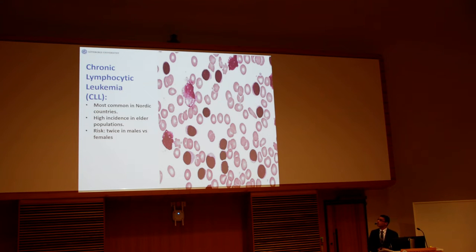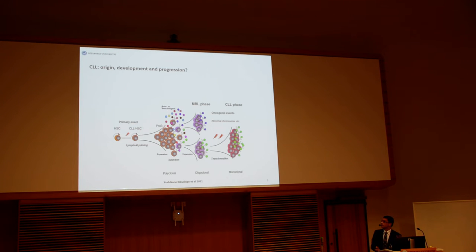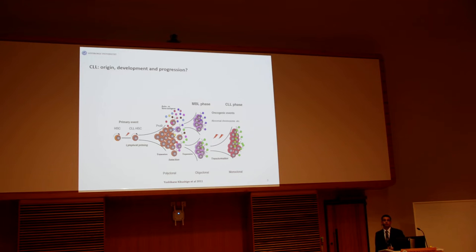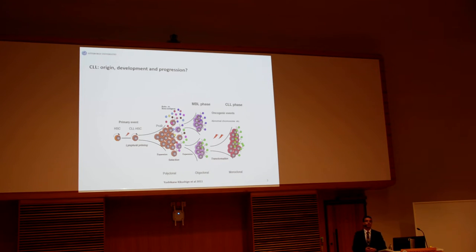CLL is one of the most common malignancies in the Western world, including the Nordic countries, and it is highly incident among the elderly population. The risk for developing the disease is two-fold higher among males compared to females. CLL develops from a mature B-lymphocyte and first gives rise to a pre-malignant phase called monoclonal B-lymphocytosis, which is characterized by being indolent and non-malignant. But over time, with the accumulation of oncogenic events and the emergence of somatic mutations, it will eventually progress into a more aggressive phase called Richter syndrome, which is highly aggressive and incurable.